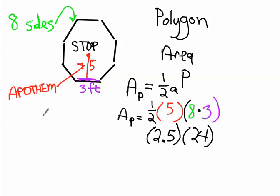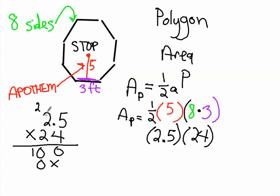And then we come over here and we go 2.5 times 24. Five times four is 20 and you carry the two. Two times four is eight, plus the two is 10. And then two times five is 10, so zero and carry the one.